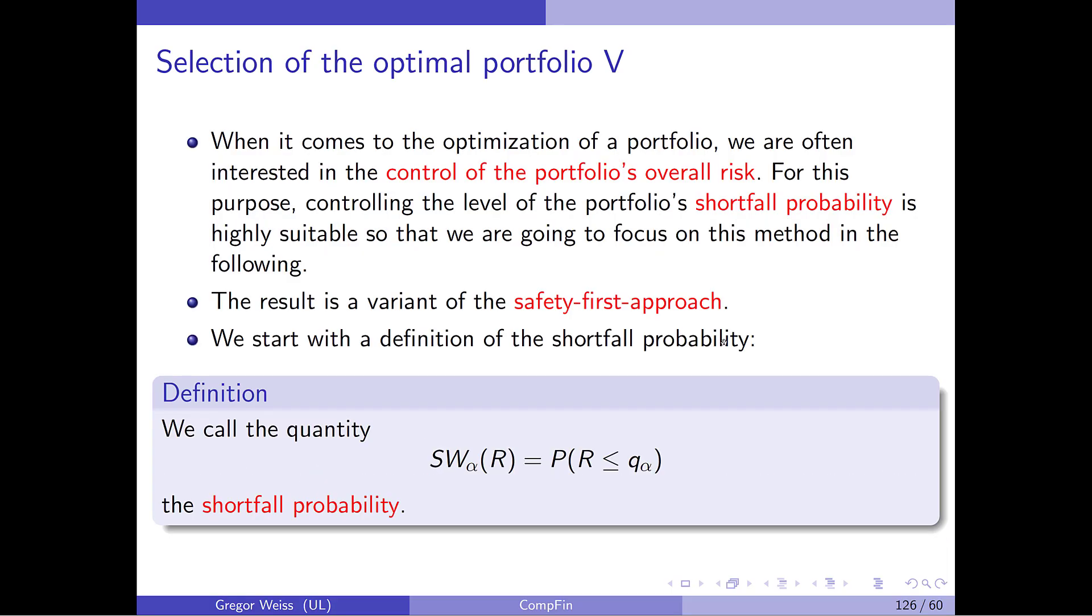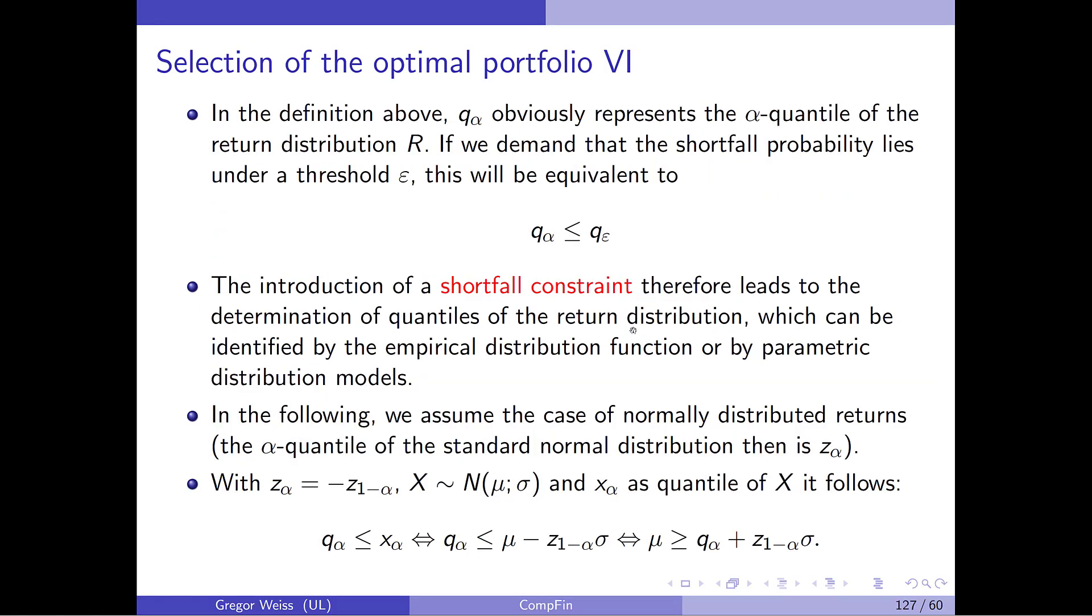When it comes to the optimization of a portfolio, even more often, you are actually interested in not just controlling the volatility, but you also want to do something we call a safety first approach. And thus, you take a shortfall probability. So this could be the shortfall probability, that there's the probability that the return is below a certain threshold. And as you can imagine, I've chosen a threshold with a notation Q alpha. And this will later on be the alpha quantile of the profit and loss distribution. So you take a shortfall probability. And then what you do is you require that the shortfall probability is smaller or equal than a certain other threshold. So if we demand that the shortfall probability lies under a threshold, this will be equivalent to this quantile being smaller or equal than another quantile. You introduce this.